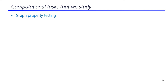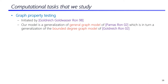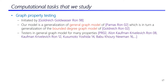In our model, we study two kinds of computational tasks. The first involves testing graph properties. This field was initiated by Goldreich et al. for graphs represented by adjacency matrices. Later, Goldreich and Ron studied testing in the adjacency list representation for bounded-degree graphs. Concurrently, Parnas and Ron studied the general graph model, where graphs are represented by adjacency lists without any bound on the degree. Our model is a generalization of this general graph model.